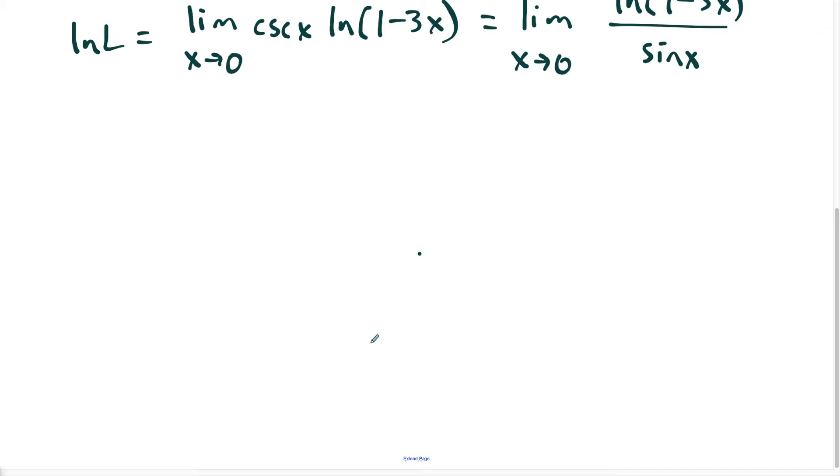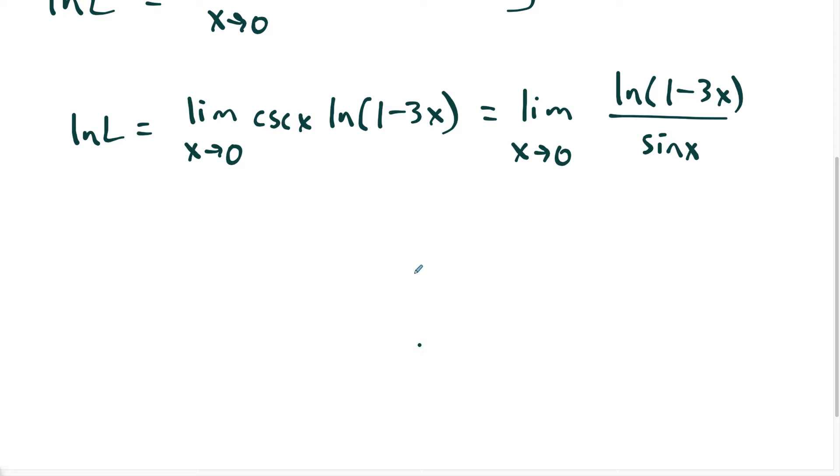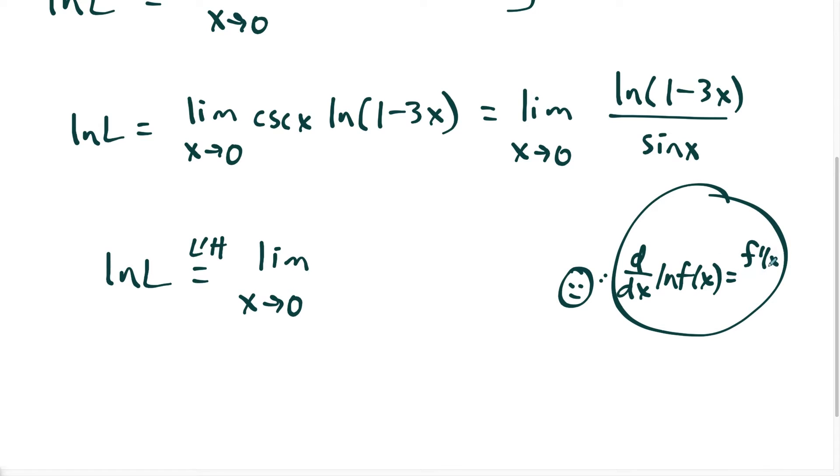So what I could say here is we have natural log of L equals by L'Hopital's rule, the limit as x approaches zero. And another thought process I'm going to borrow here, anytime I have to take the derivative of natural log of a function, this is just going to be f prime of x over f of x, the inside function. So this is the chain rule variant for natural log.